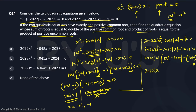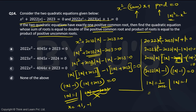This gives (2022|x| − 1)(|x| − 1) = 0. So there are two possibilities for |x|: |x| = 1/2022 or |x| = 1. From |x| = 1/2022, x can be +1/2022 or −1/2022. From |x| = 1, x can be +1 or −1. So the second quadratic equation gives four roots: +1/2022, −1/2022, +1, and −1.